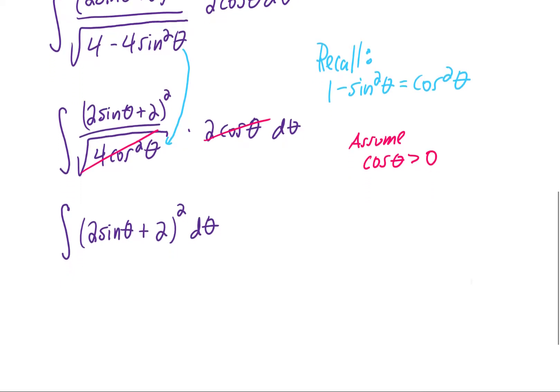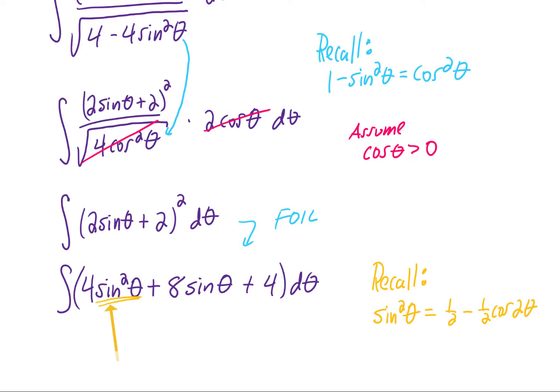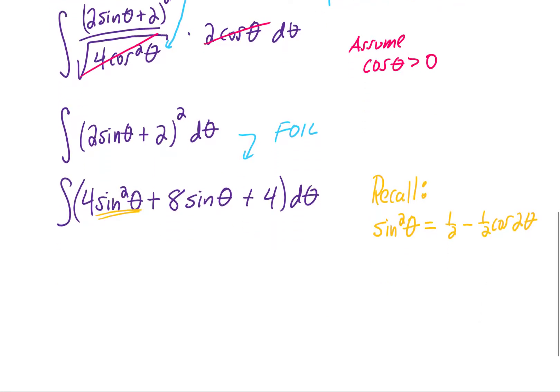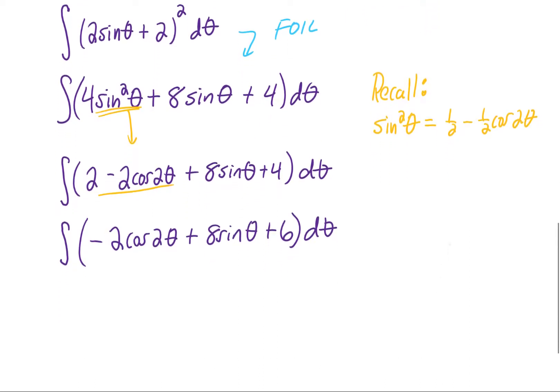And to integrate this, I think we're just going to have to foil that term out. This leaves us with three terms. The second and third term, we can integrate fairly easily. This first term, though, has a sine squared in it. And whenever integrating something like that, we need to remember our trig identity. Sine squared is 1 half minus 1 half cosine 2 theta. Let's make that substitution and finally do the integration. I'm noticing after making that substitution, we have a 2 and a 4 that we can combine. So I guess we can go ahead and do that. And finally, it looks like we can integrate.